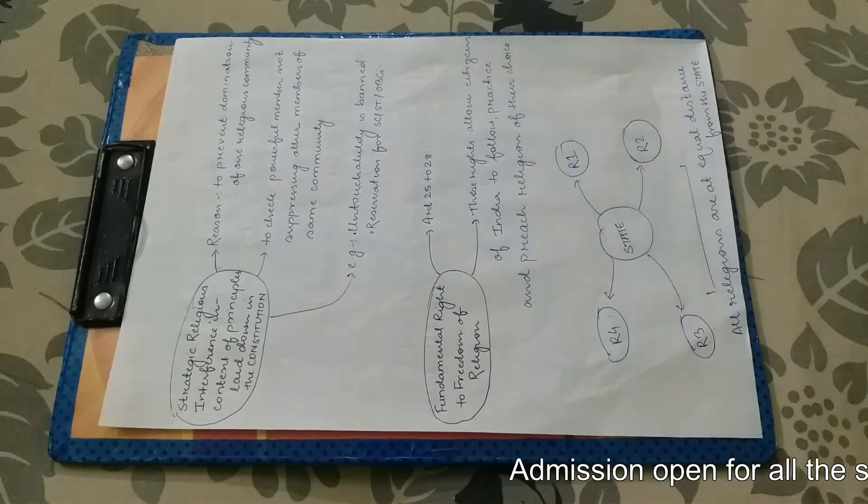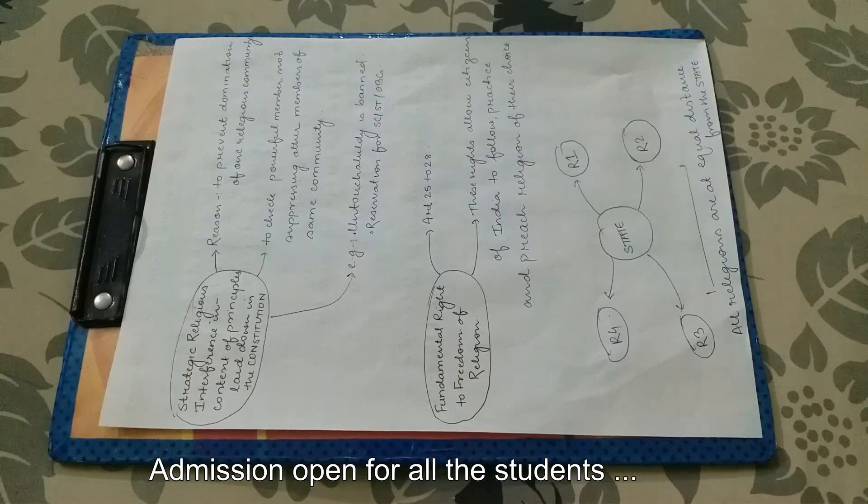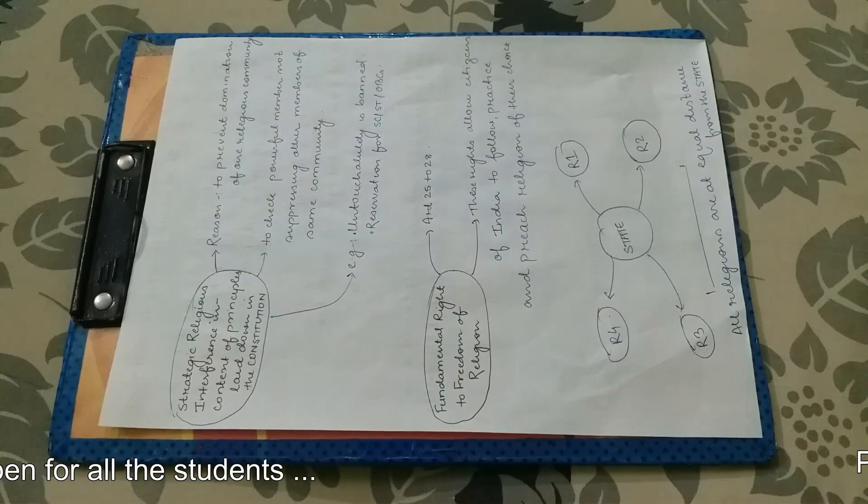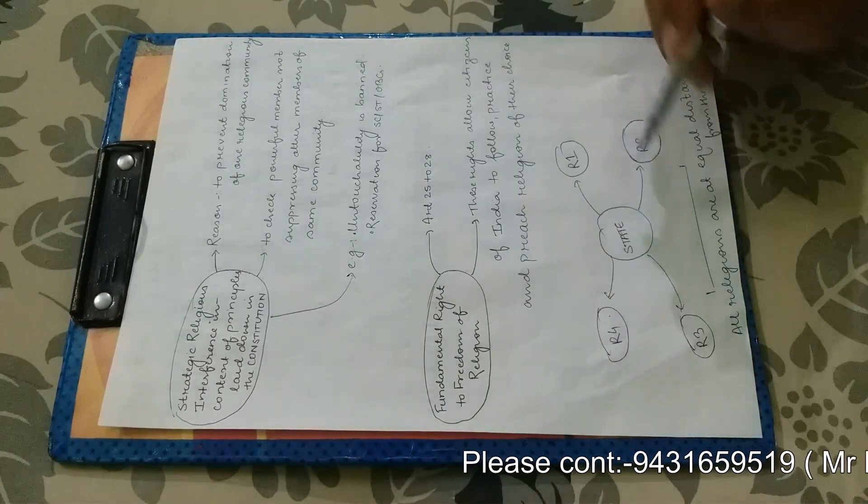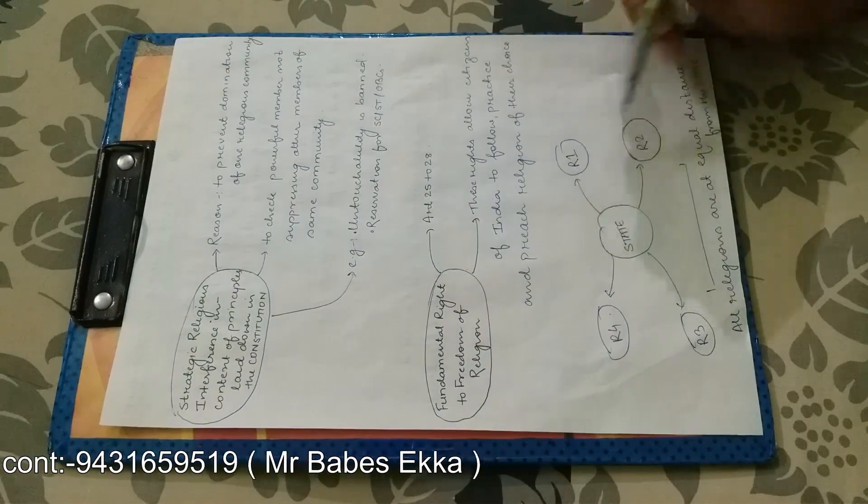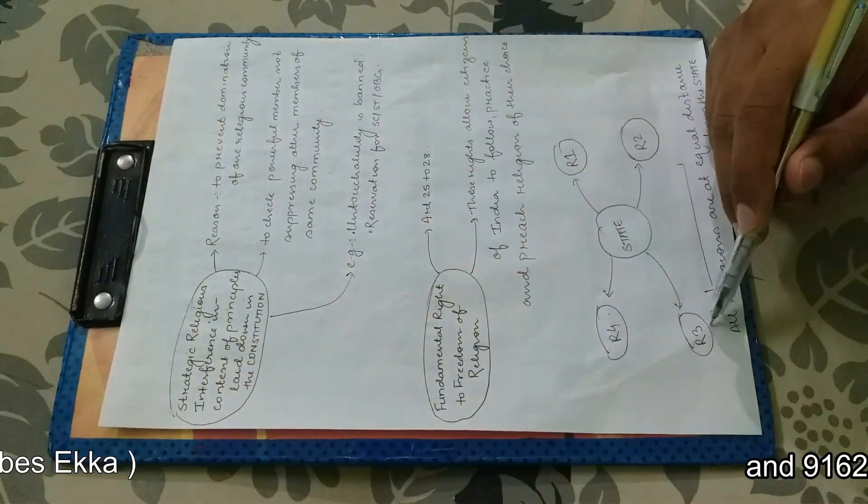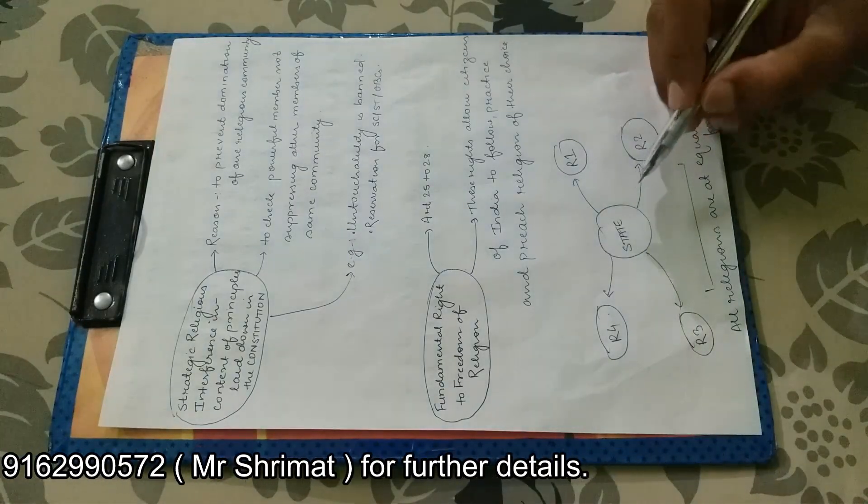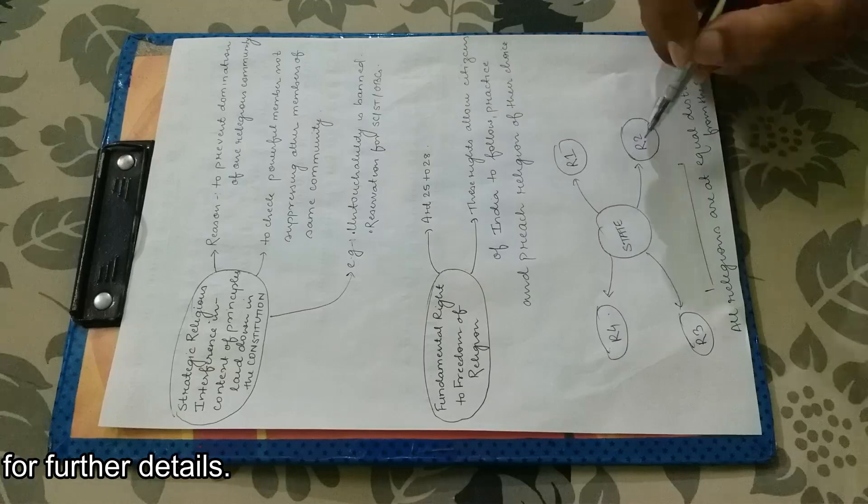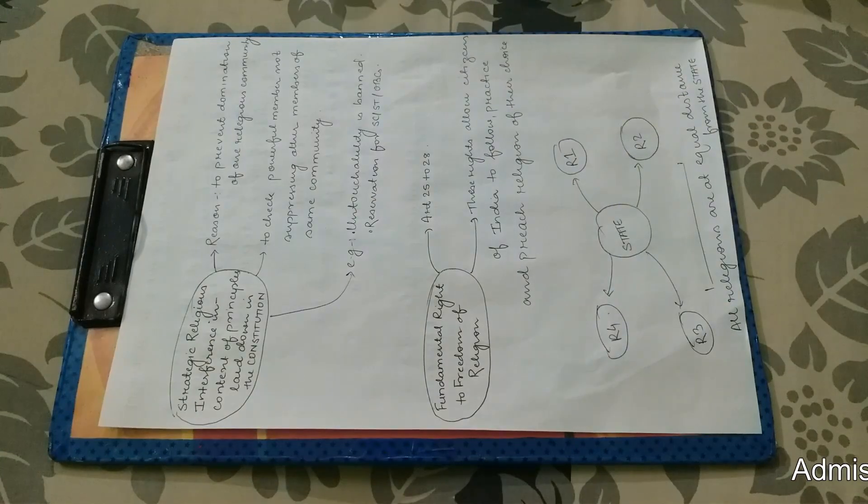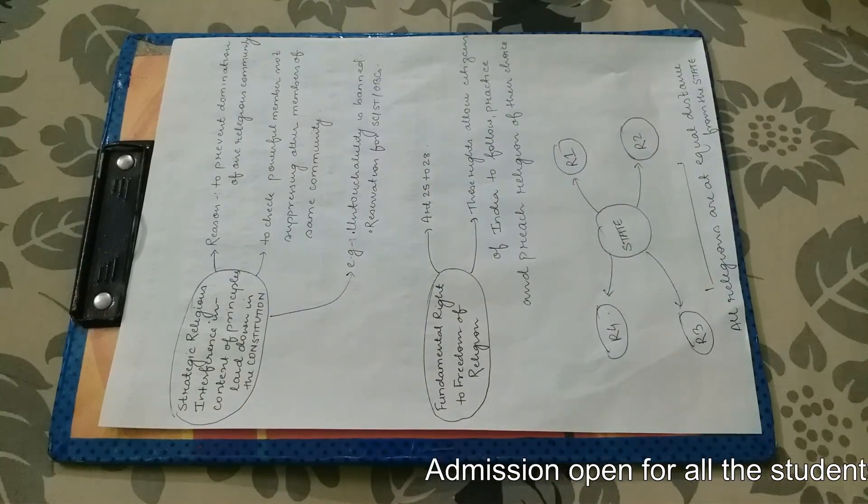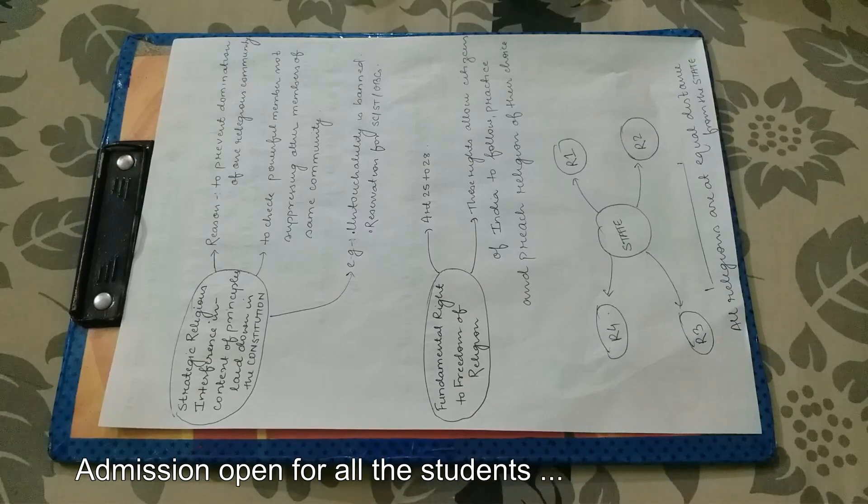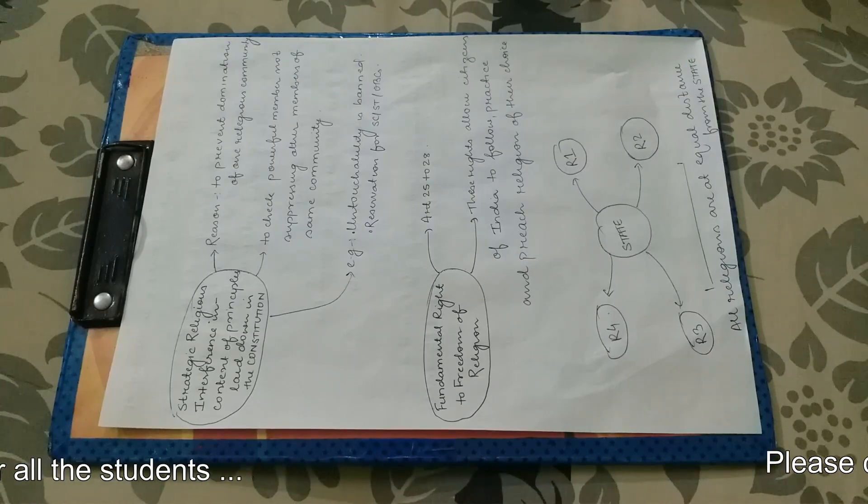Now, a simple idea to explain what is actually the secularism. Suppose this is state and this is religion one, this is religion two, this is religion three, this is religion four. And what you can observe is that every religion is at equal distance from the state.